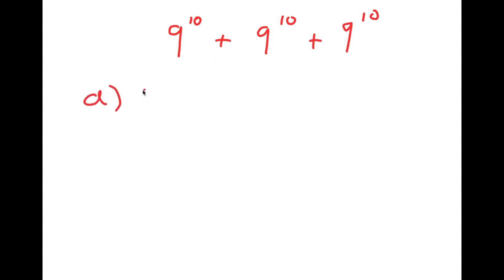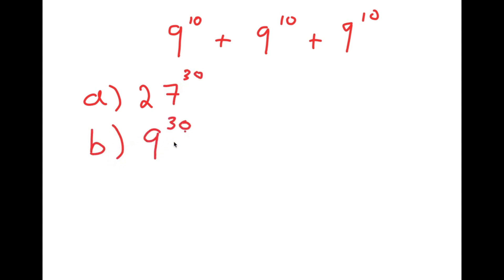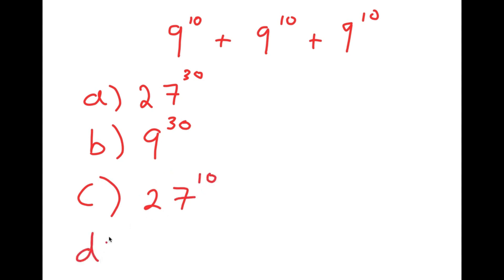For A, I have 27 to the power of 30. For B, I have 9 to the power of 30. For C, I have 27 to the power of 10. And for D, I have 3 to the power of 21.